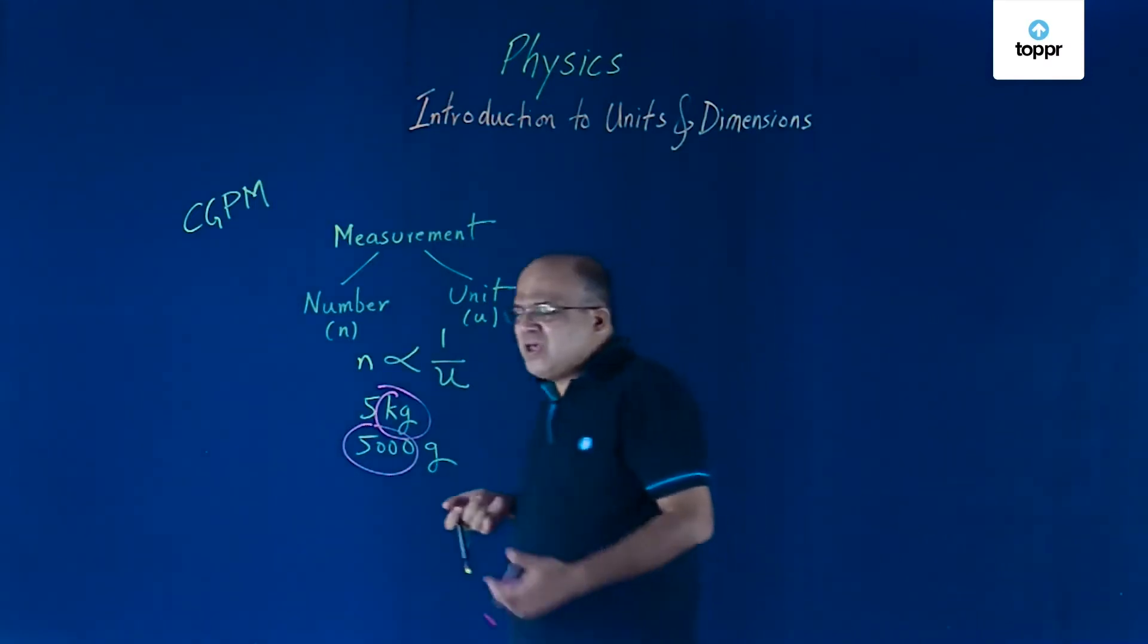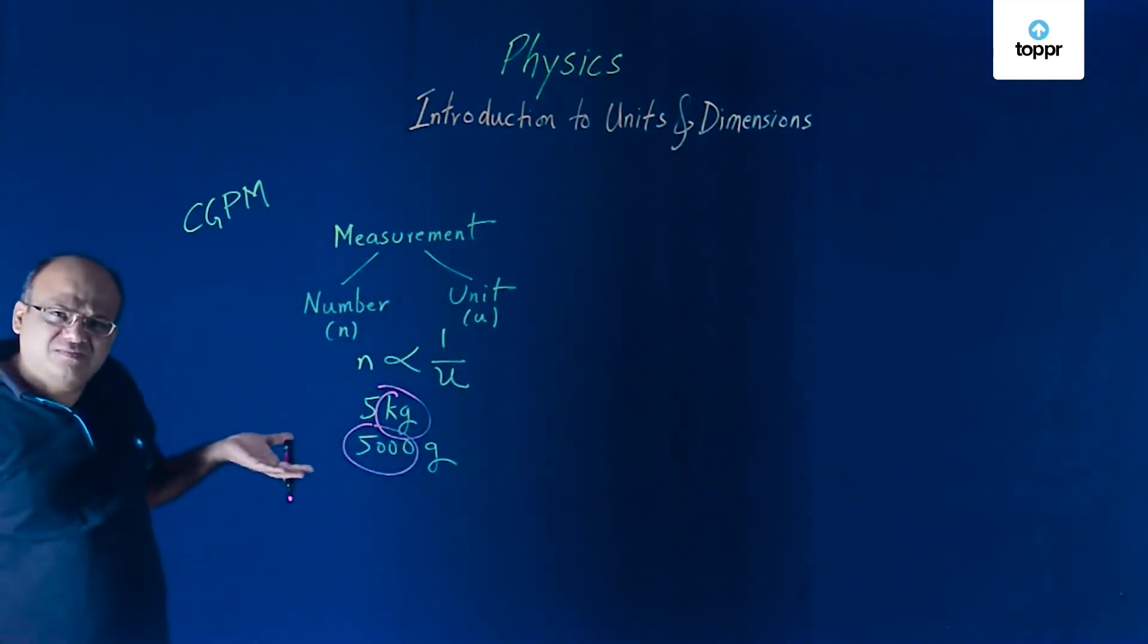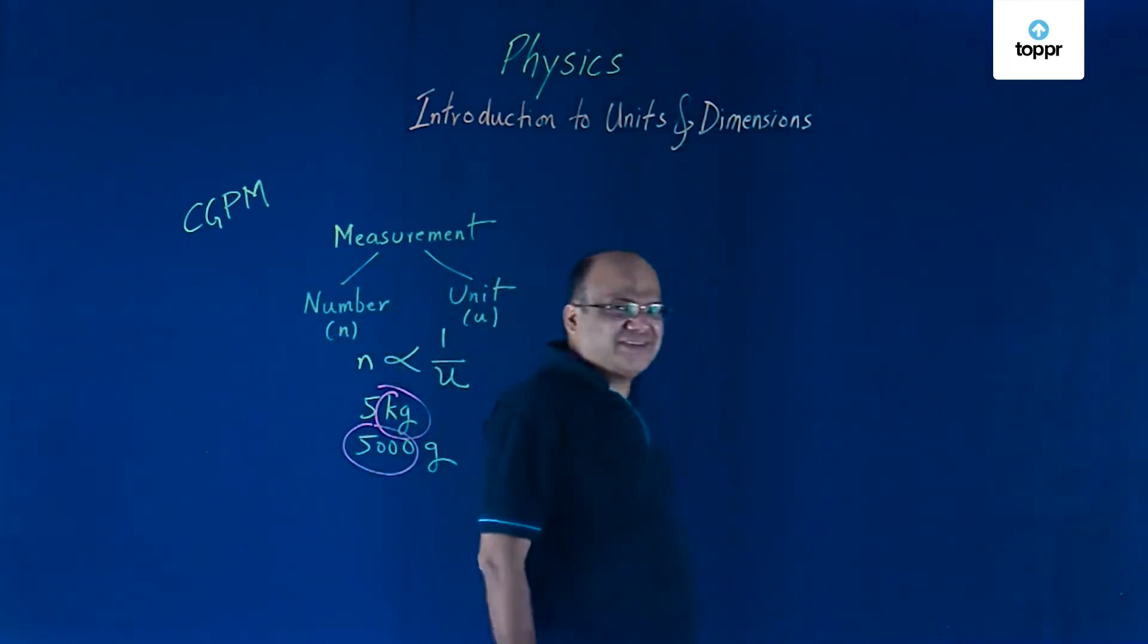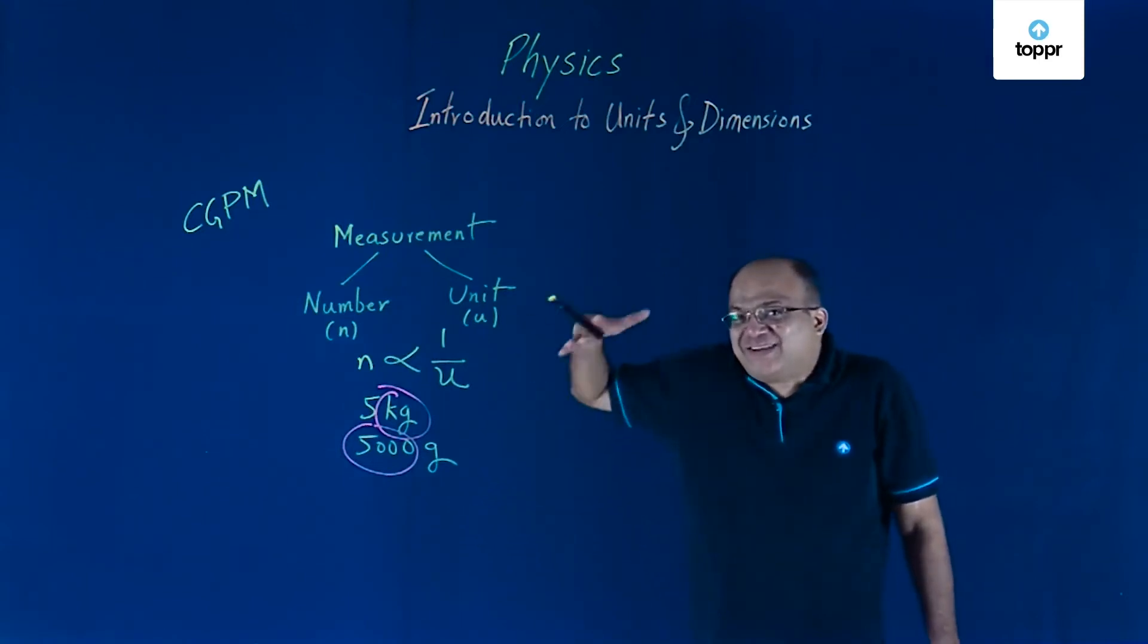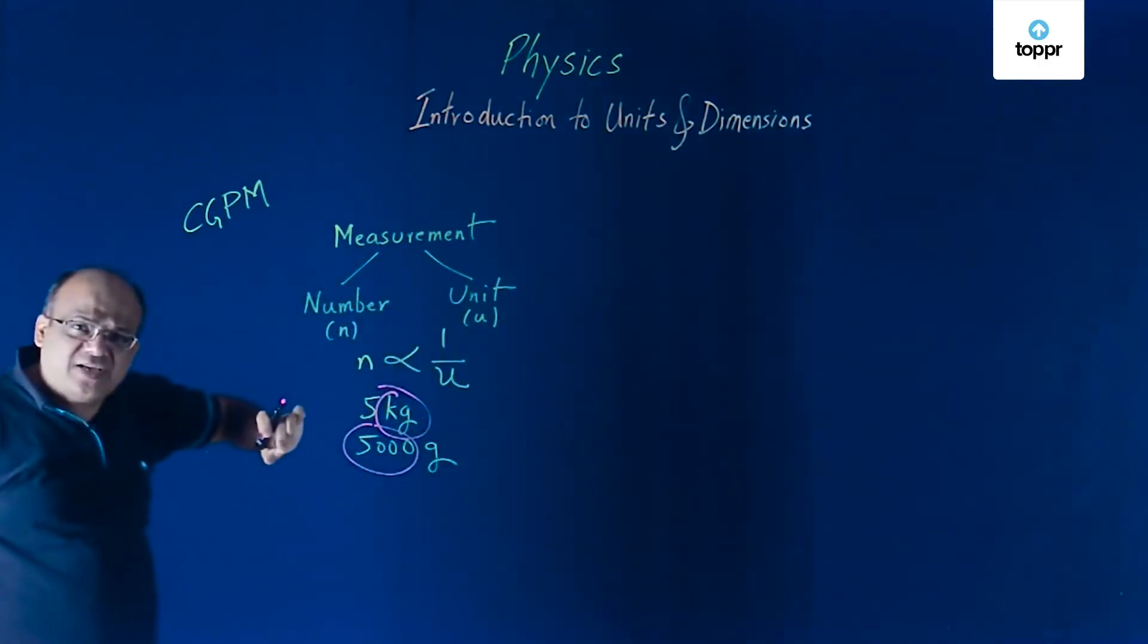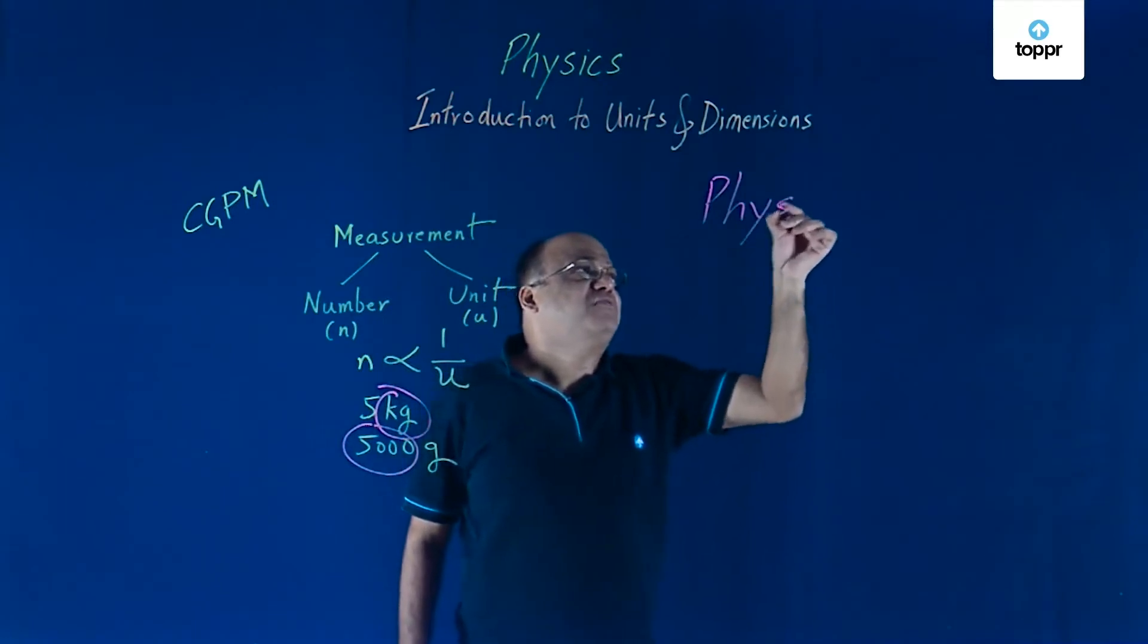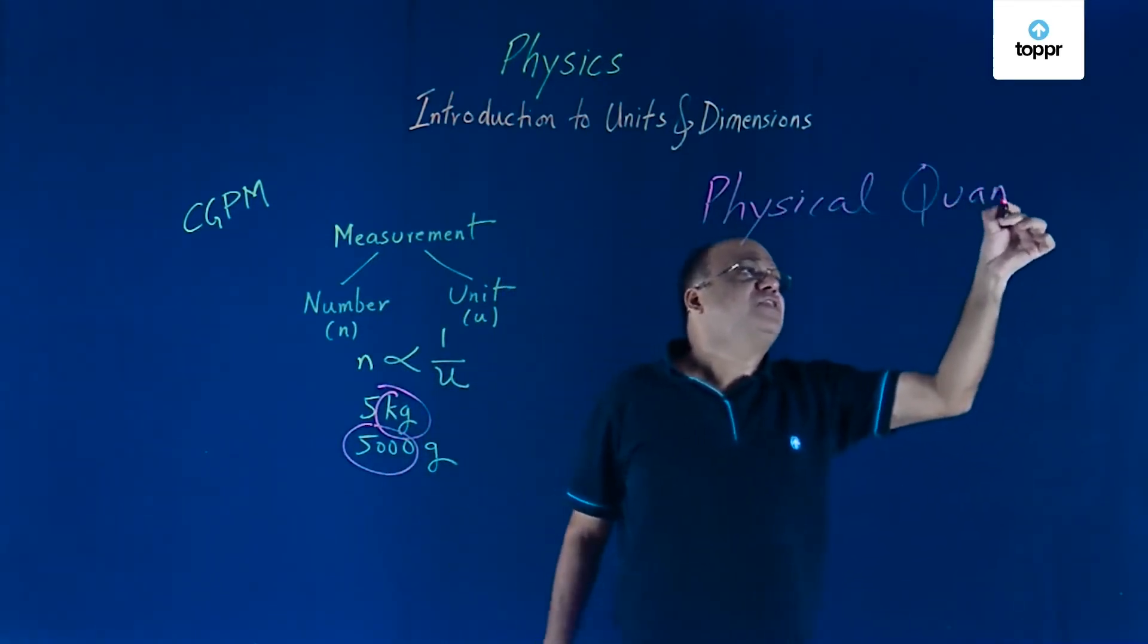What are the various types of physical quantities? How many kinds of physical quantities we have? Two. What are the two types? Scalars and vectors, we are going to classify physical quantities like that later. But right now, we will classify physical quantities on the basis of units. On the basis of units, physical quantities are of two types.